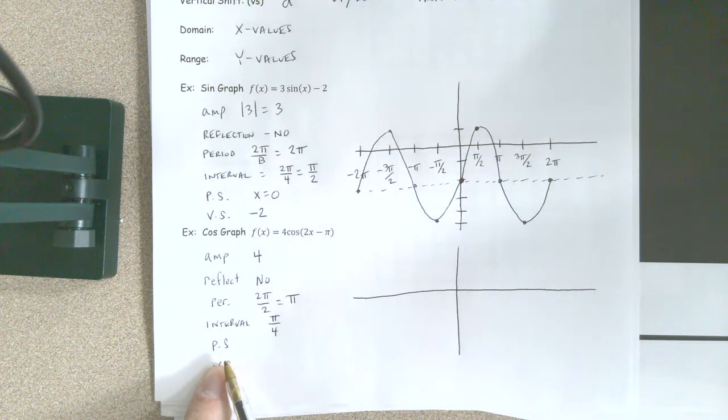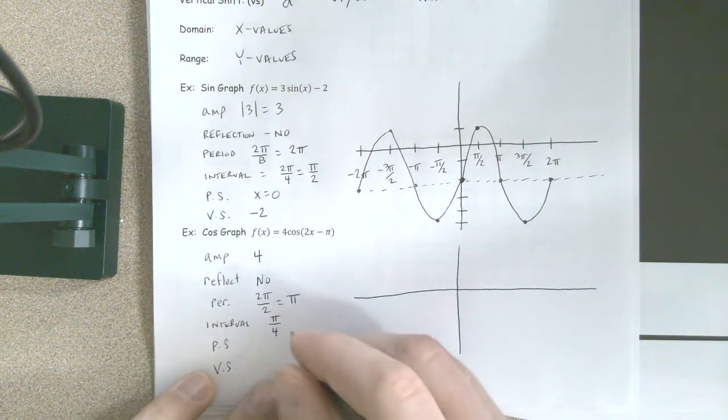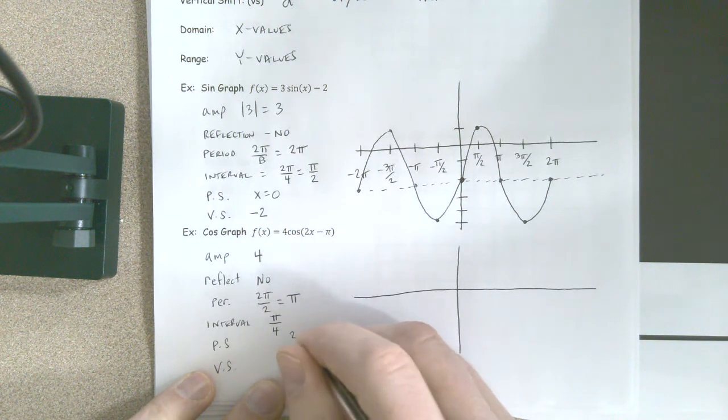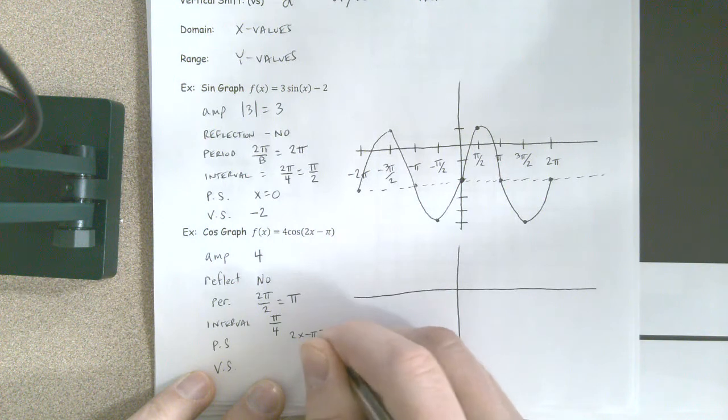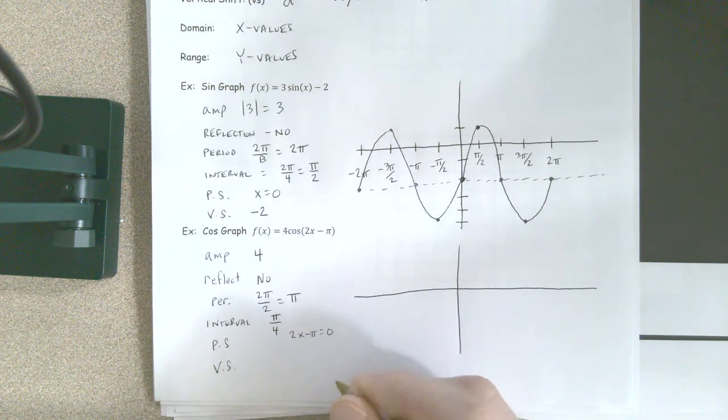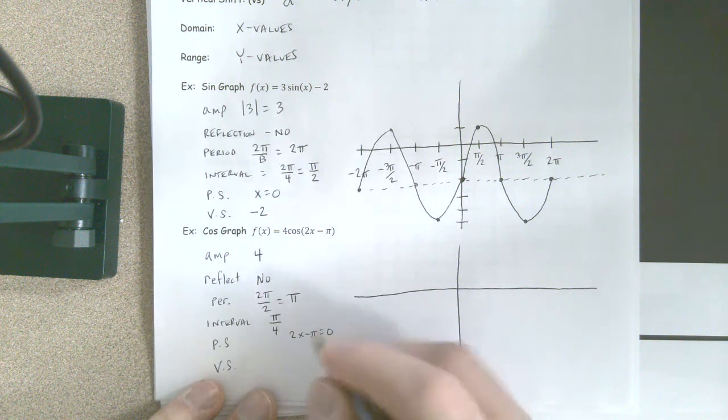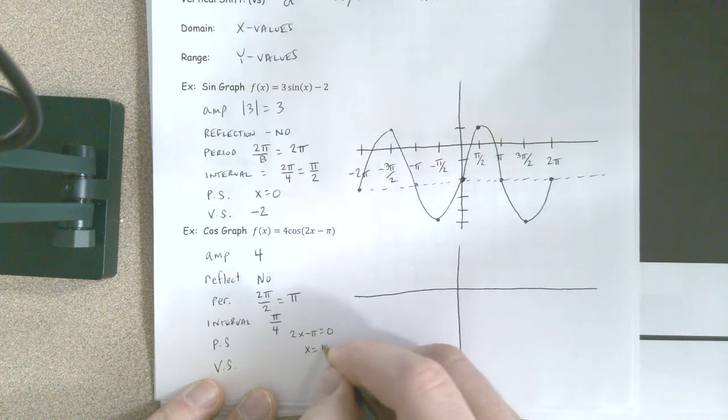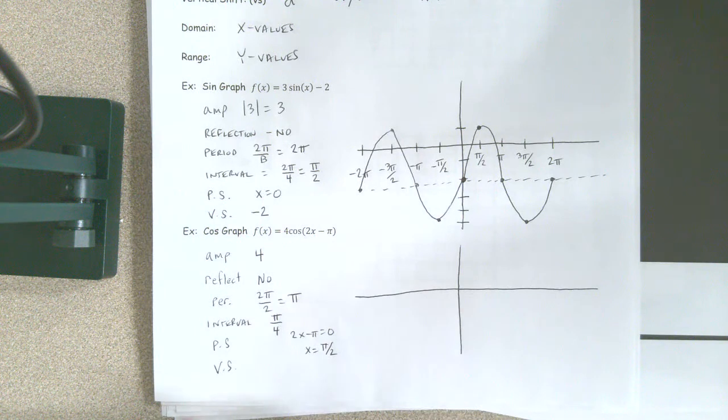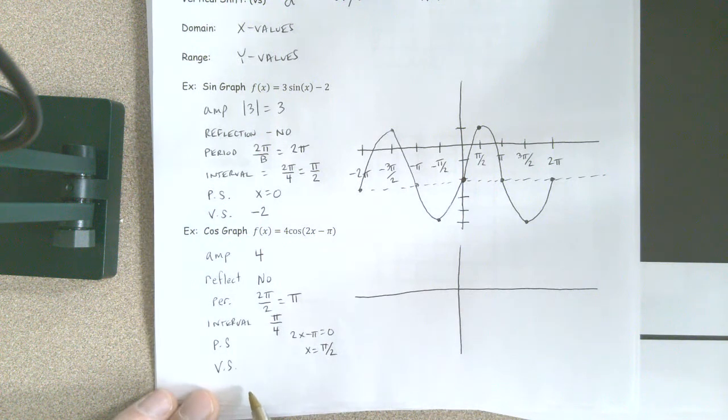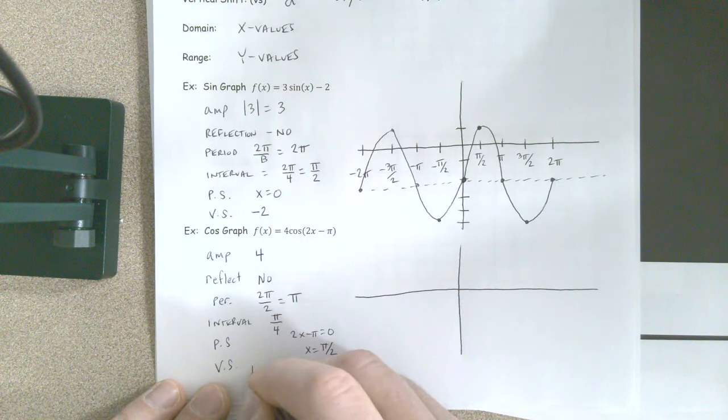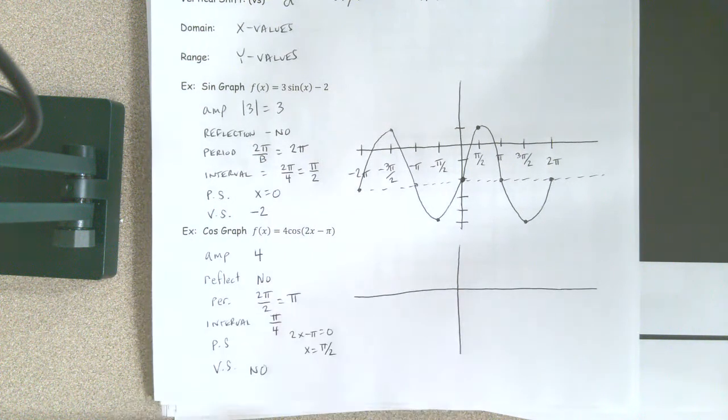Do we have a phase shift? Remember on that, we're going to take 2x minus pi and set it equal to 0. So our phase shift is going to be pi halves. Everybody agree with that? Do we have a vertical shift? Okay, so no vertical shift.